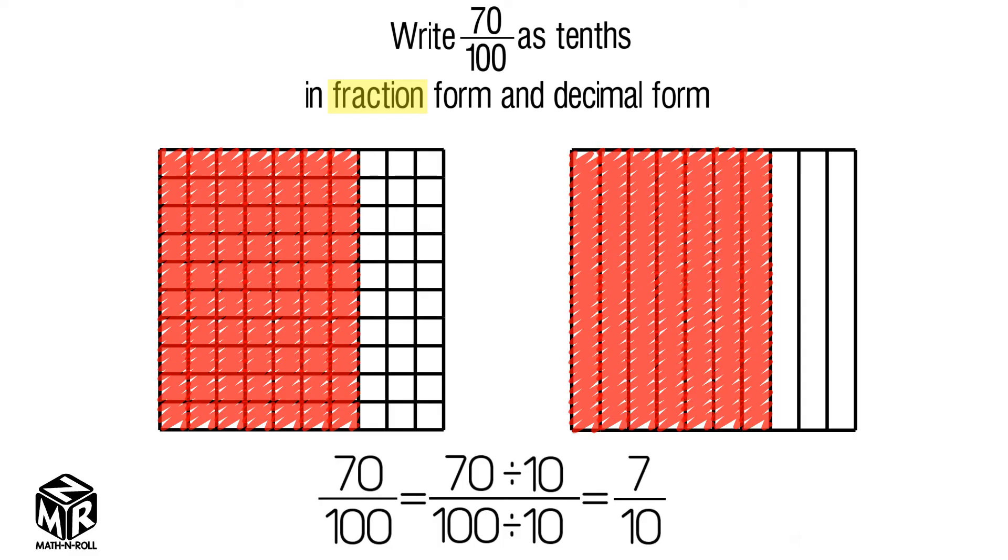So 70 hundredths equals 7 tenths. We wrote 70 hundredths as tenths in fraction form.